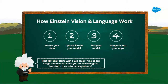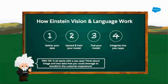There are four basic steps to get up and running with Einstein Vision and Language. First, gather your data — that's where we'll spend a lot of time. Then upload and train your AI model, test it to ensure accurate predictions, and integrate it into your apps. Historically, the AI lab building models hasn't been tightly integrated with the business and end users. Because Einstein Vision and Language is baked into everything at Salesforce, we're very good at bringing those AI models into your end users' experience.